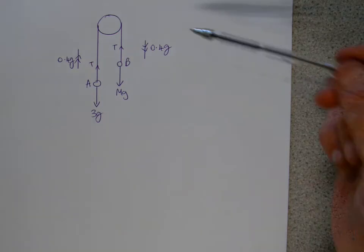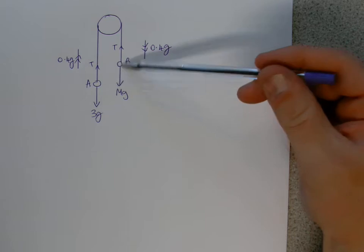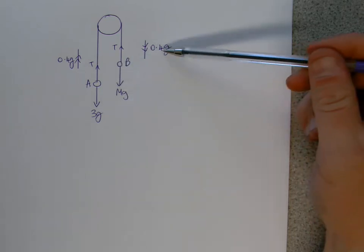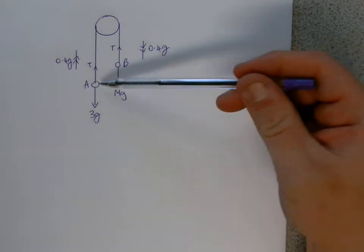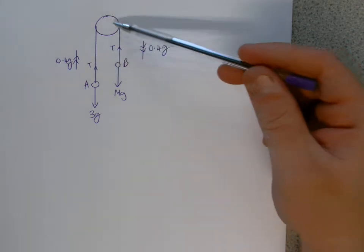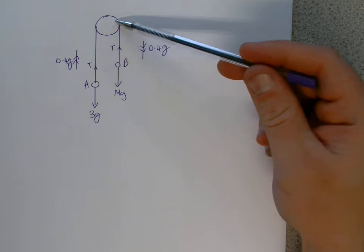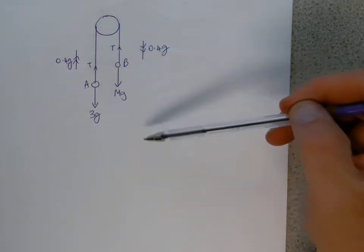Okay, so in this setup here, we're told that when this gets released, particle B will fall this way, and they move with that acceleration of 0.4G, and of course then A will rise with the same acceleration, because the string is inextensible. So it's the same tension, and smooth pulley, same acceleration throughout.